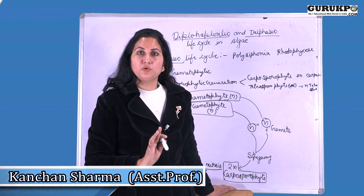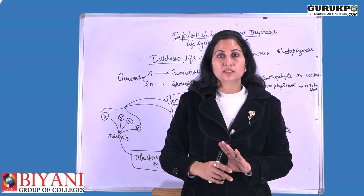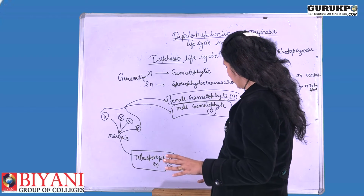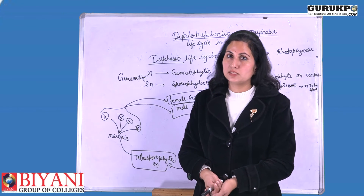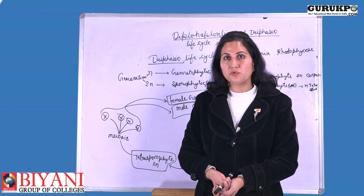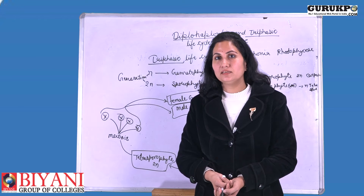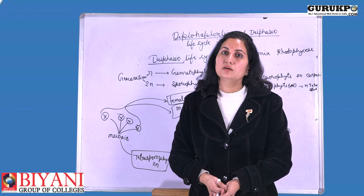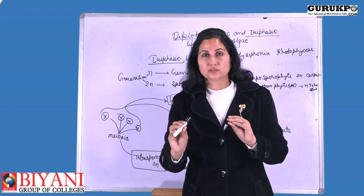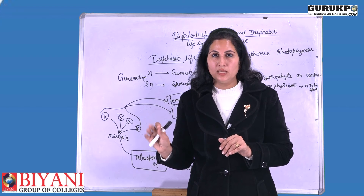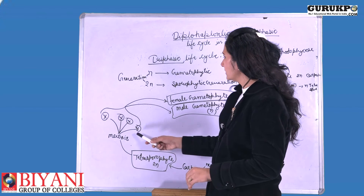In the carposporophytic generation, mitotic division is occurring and they form special types of spores called carpospores. These carpospores under favorable conditions germinate and form the tetrasporophytic plant. This tetrasporophytic plant also has sporangia, and in the sporangia of the tetrasporophytic plant meiosis or reduction division occurs. After reduction division, meiospores or spores are formed — these spores are called tetraspores, as they are formed by the tetrasporophyte.